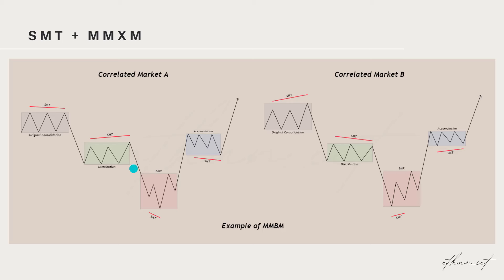Once that occurs, you're looking for your smart money reversal — SMT divergence once again. So market A making a lower low, market B fails to make that lower low. The same thing over here with the other phases: SMT divergence on the highs for the distribution phase where market A makes a higher high and market B fails to make the higher high. And then in the original consolidation, market B makes a higher high while market A fails to make the higher high — that would be SMT divergence.